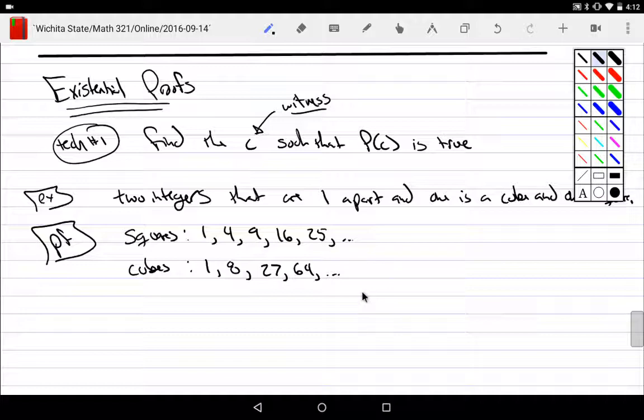And then we would just go through this process. And you would say, well, wait a second. Hey, two integers that are one apart, one's a cube, one's a square. Hey, there's a cube, there's a square, they're one apart. And yes, the answer is yes. 2 cubed equals 8 and 3 squared is equal to 9. So this is obviously true.